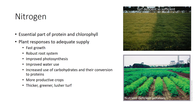Nitrogen more than any element promotes rapid growth and dark green color. Plants require more nitrogen than any other mineral element as an essential part of protein and chlorophyll. As the most mobile of mineral nutrients in the environment, readily lost from the soil, it is usually most in need of annual replenishment.